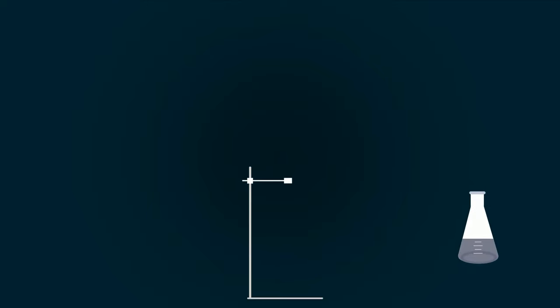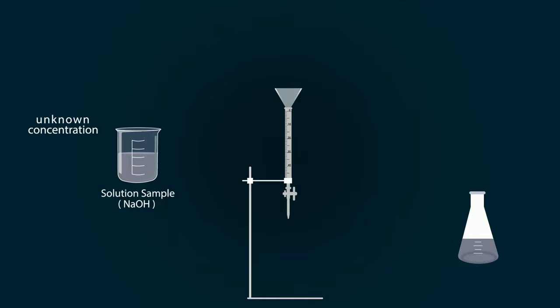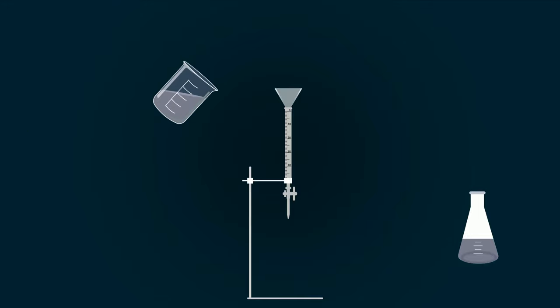Now take iron stand and put burette on it. Put funnel on the top of the burette. Now start adding NaOH sample solution with the help of a funnel into the burette. Fill the NaOH solution up to the zero point.